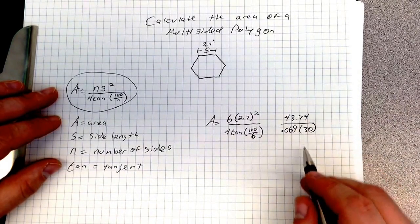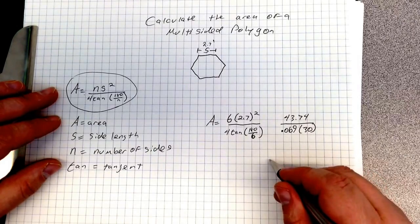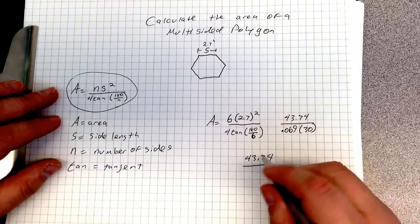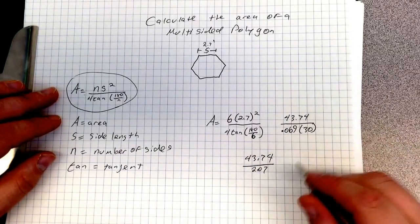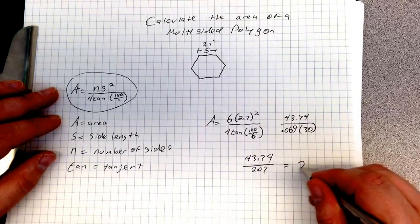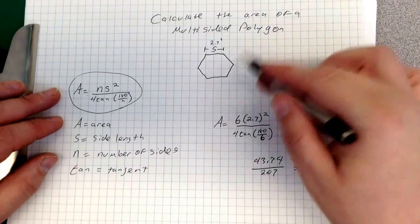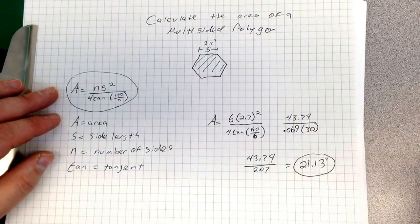So now I multiply it out a little bit more. 0.069 times 30 is 2.07, so I have 43.74 divided by 2.07. Divide that out further, I am left with 21.13. So the area of this multi-sided polygon is 21.13.